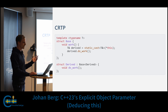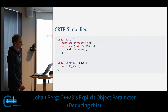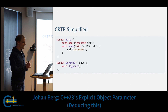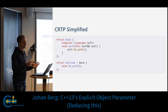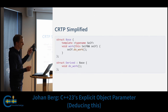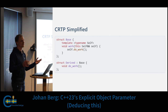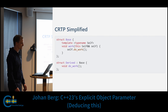By using 'deducing this' we can simplify this. As you can see, the base class is no longer a template class. When we call the work function on our derived type, self will be deduced to the derived type, so we don't need a cast anymore inside the work function. We can just call self.doWork and it will call the function in the derived class — it will just work.